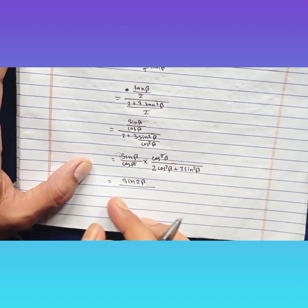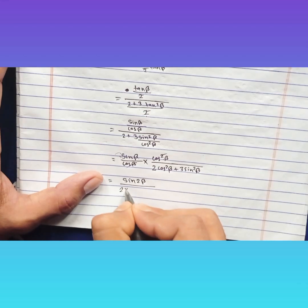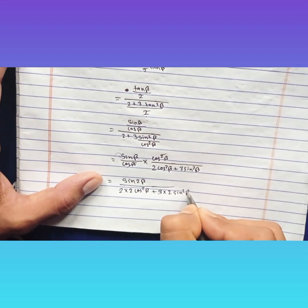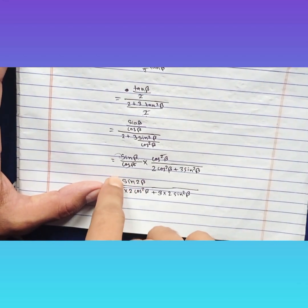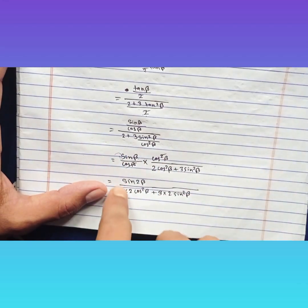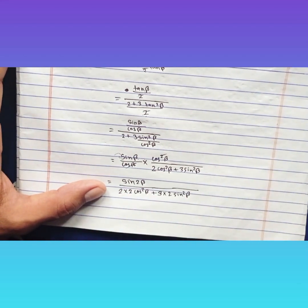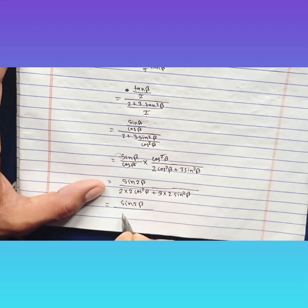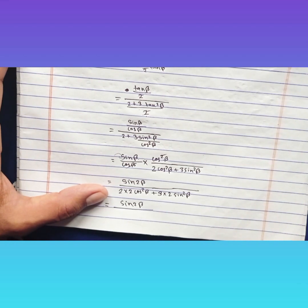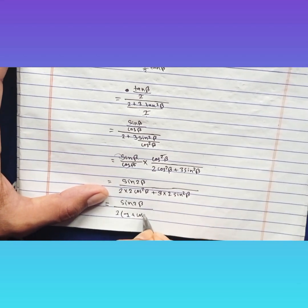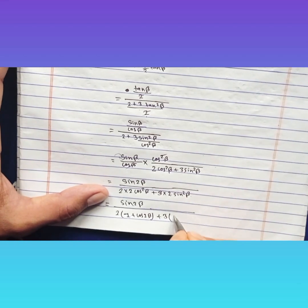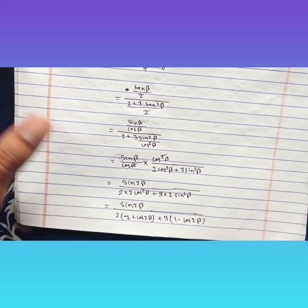Since we multiplied by 2, the denominator becomes 2 × 2 cos² β plus 2 × 3 sin² β, which is 4 cos² β plus 6 sin² β. Now apply double-angle formulas: 2 cos² β = 1 + cos 2β, so 4 cos² β = 2(1 + cos 2β); and 2 sin² β = 1 - cos 2β, so 6 sin² β = 3(1 - cos 2β).